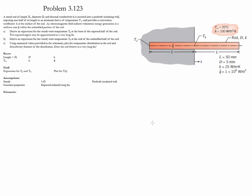The goal of the problem has three parts. The first is to derive an expression for the steady state temperature Tb, which is the temperature of the base of the exposed half of the rod. This exposed region can be approximated as a very long fin. The second part is to derive an expression for the steady state temperature T0, which is the end of the embedded half of the rod into the wall. The third part is to use numerical values provided in the schematic to plot the temperature distribution of the whole rod and describe the key features of this distribution.